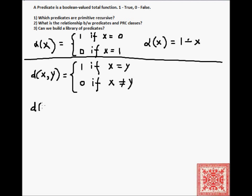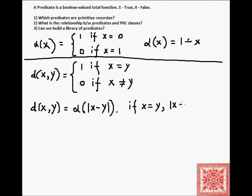Given that alpha is primitive recursive, let's use that to define d. d(x, y) is equal to alpha of the absolute value of x minus y — the monus operation — which we have shown to be primitive recursive. If x equals y, then the monus of x minus y is 0, and alpha of 0 is 1.